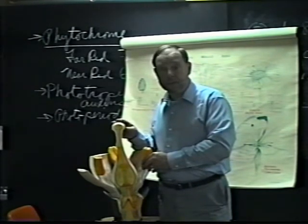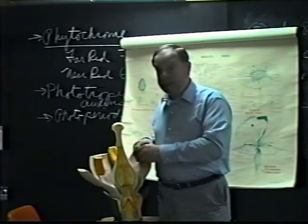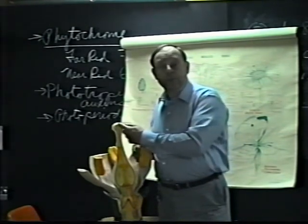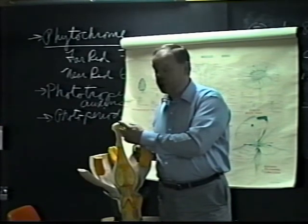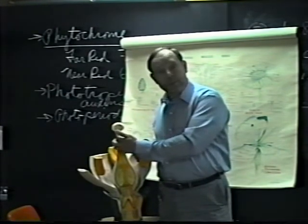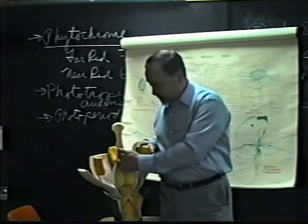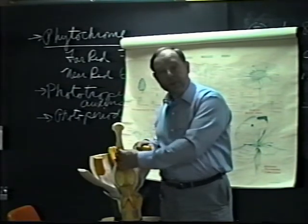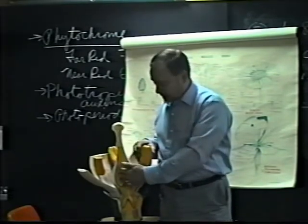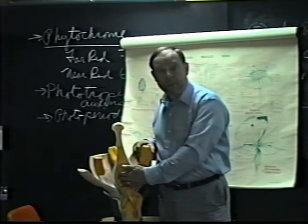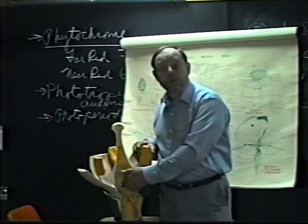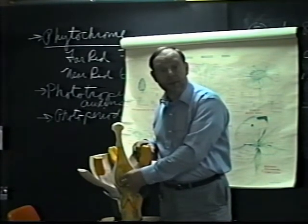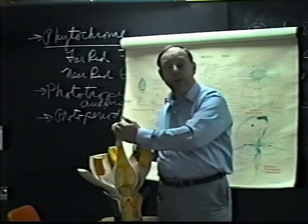The process of pollination was the transfer of pollen from the anther to the stigma. Once this occurred, the tube nucleus inside the pollen grain germinates and grows a pollen tube all the way down through the style into the ovary and then up into the ovule — the micropyle of the ovule, which is the little opening at the bottom.